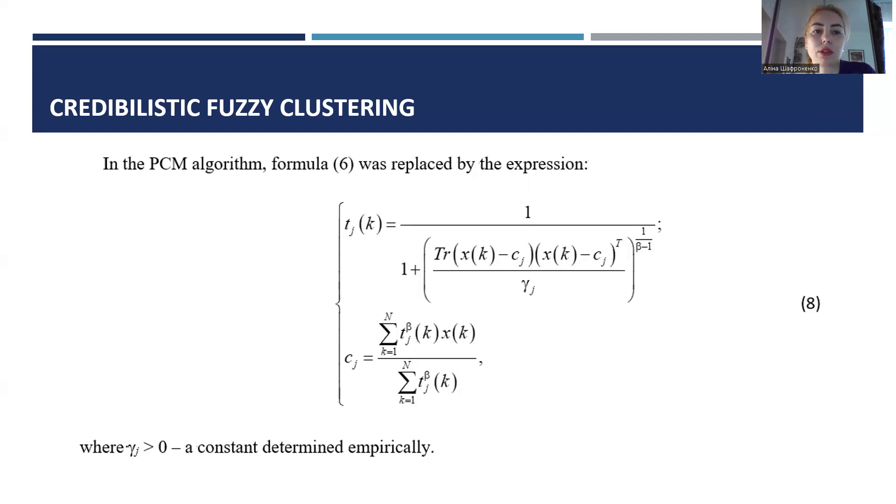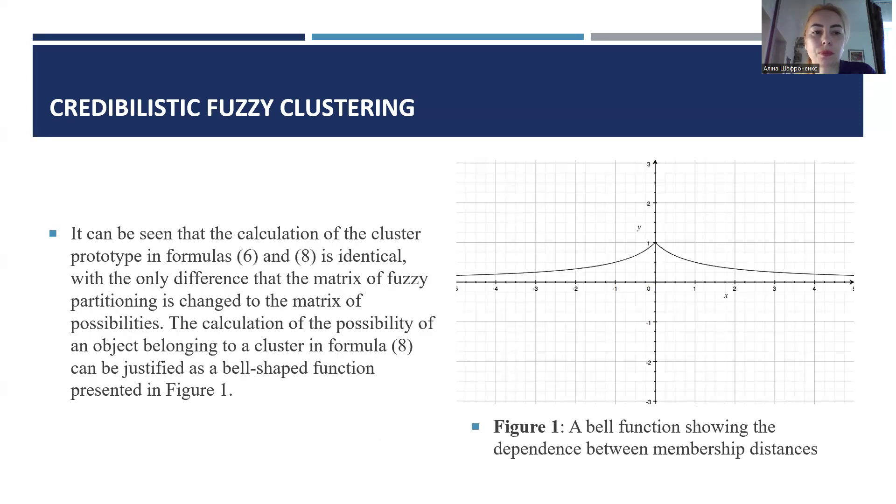In the PCAM algorithm, formula 6 was replaced by the expression formula 8. It can be seen that the calculation of the cluster prototype in formulas 6 and 8 is identical, with the only difference that the matrix of partitioning changes to the matrix of possibilities. The calculation of the possibility of the object belonging to a class in formula 8 can be justified as a bell-shaped function presented in Figure 1 on this slide.